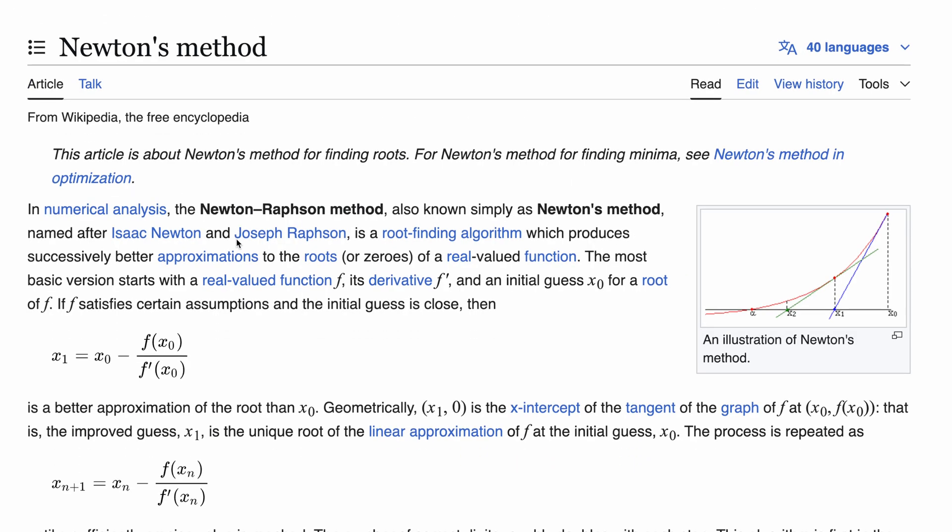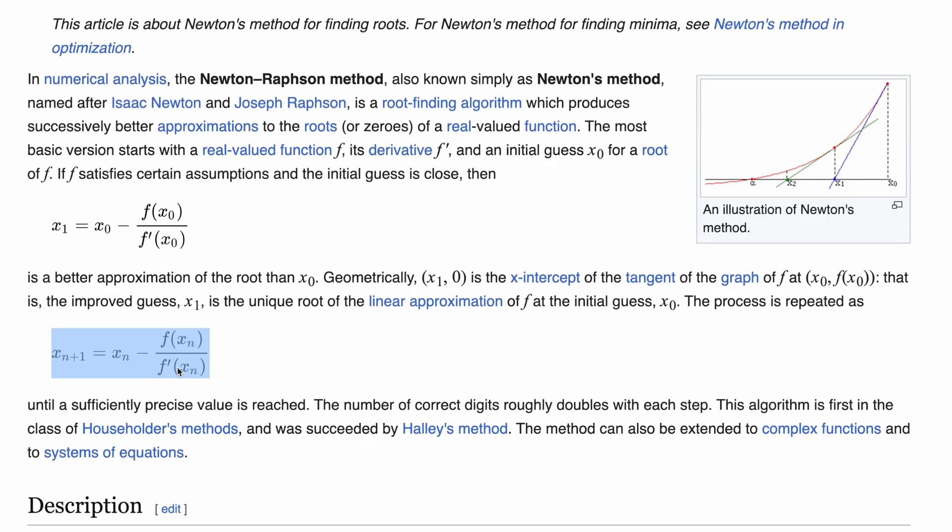The function here is simply x squared minus the number we want the square root of. It took me a bit to digest that. Doing the math here really helps to get a full understanding here.